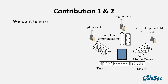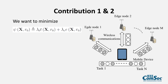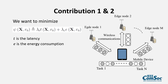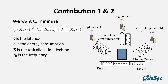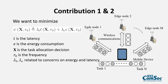We mathematically model our system as an optimization problem where the mobile device wants to minimize the weighted sum of energy consumption and application latency. Here, T is for latency, E is for energy, X is the uploading decision, and R0 is the CPU frequency. Lambda_T and Lambda_E are the weights of the two metrics. If we focus more on energy consumption, then we increase the value of Lambda_E.